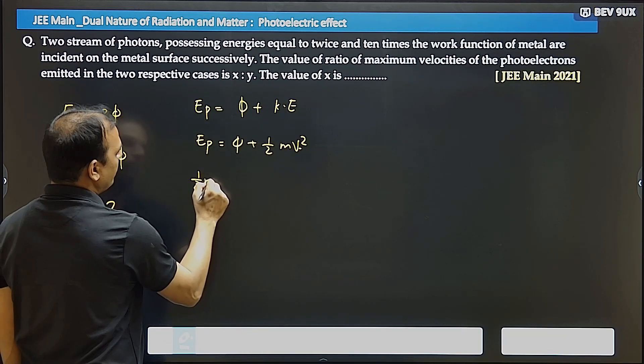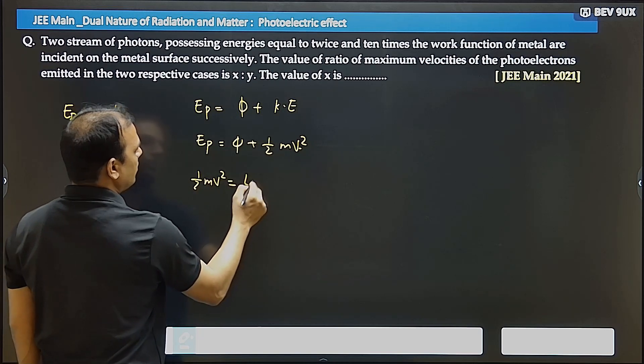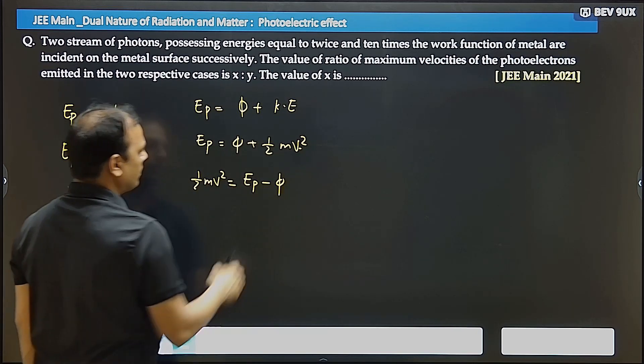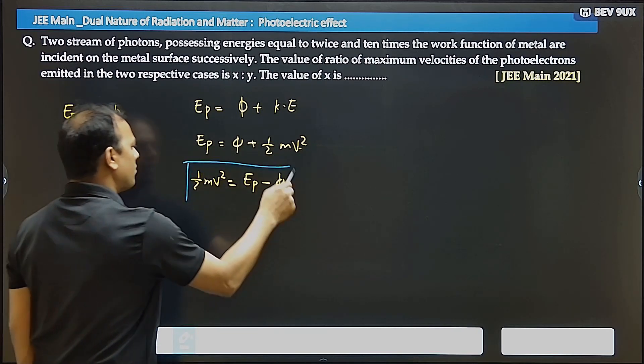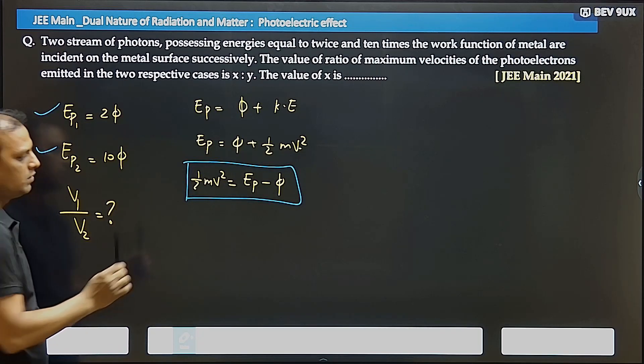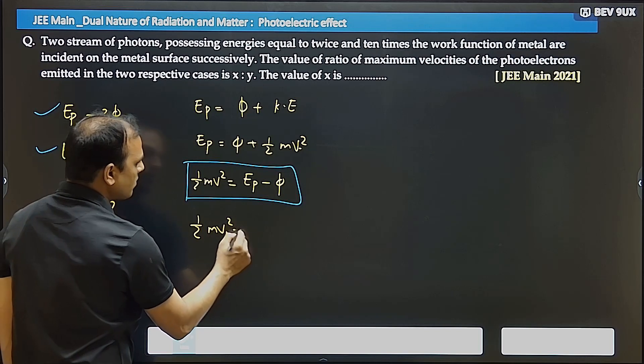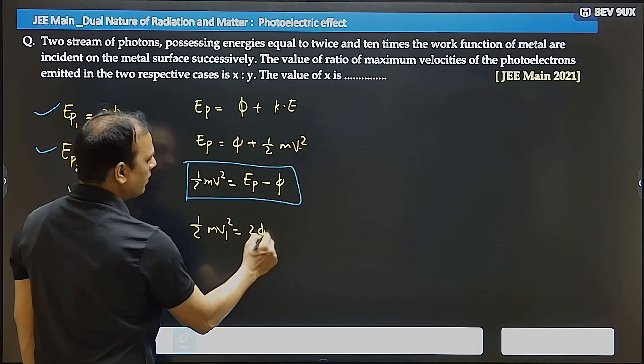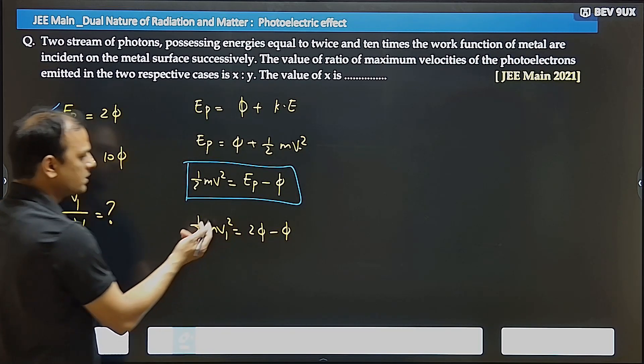Now half mv squared equals energy of photon minus work function. We have a general equation. Now we have two cases to substitute into this equation.